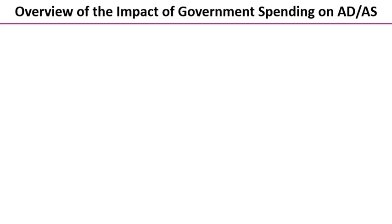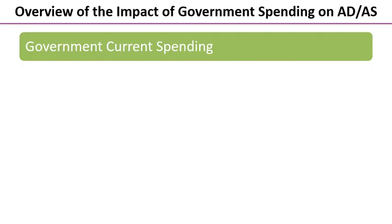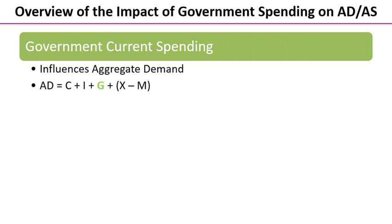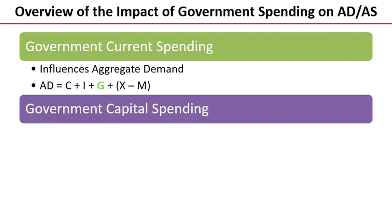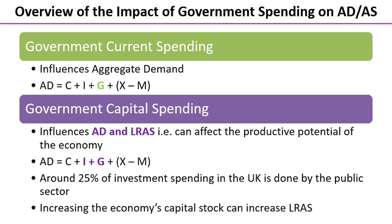We're going to break down the types of government spending and look at their impact on AD and AS, starting with government current spending — that's recurrent, day-to-day spending that directly influences aggregate demand. You can see that highlighted on the formula: government spending is a component of AD.